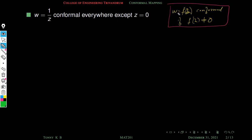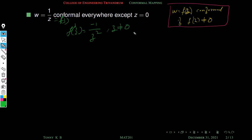An analytic function of z is conformal if its derivative is not equal to 0. To check analyticity, we take the derivative. If f(z) = 1/z, then f'(z) = -1/z². This derivative exists at all points except z = 0.